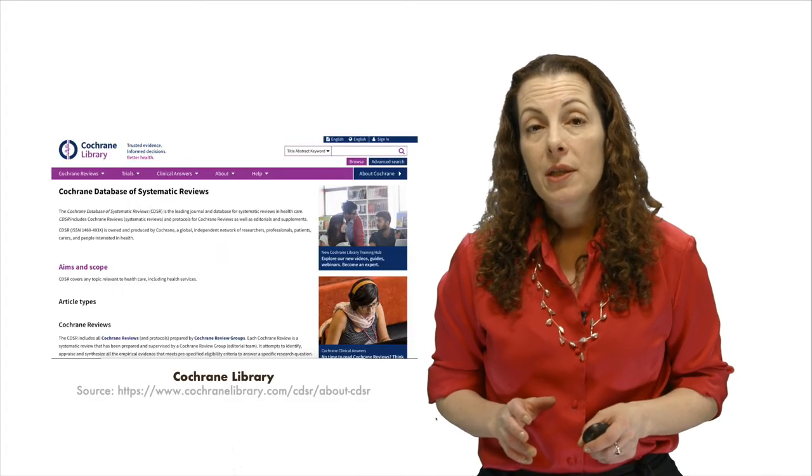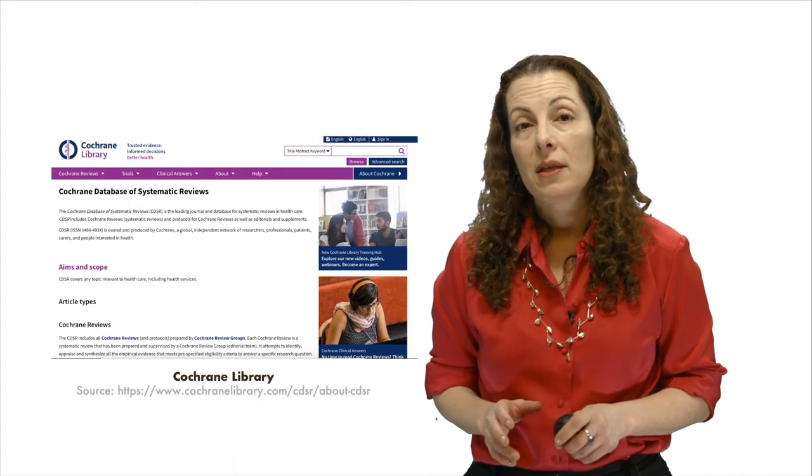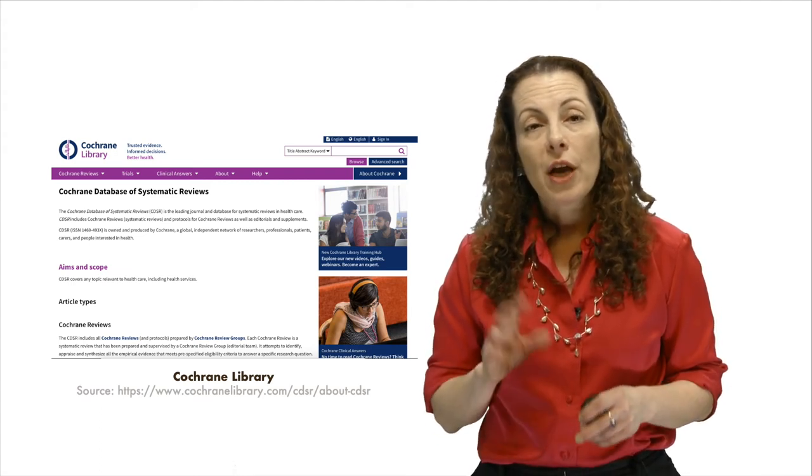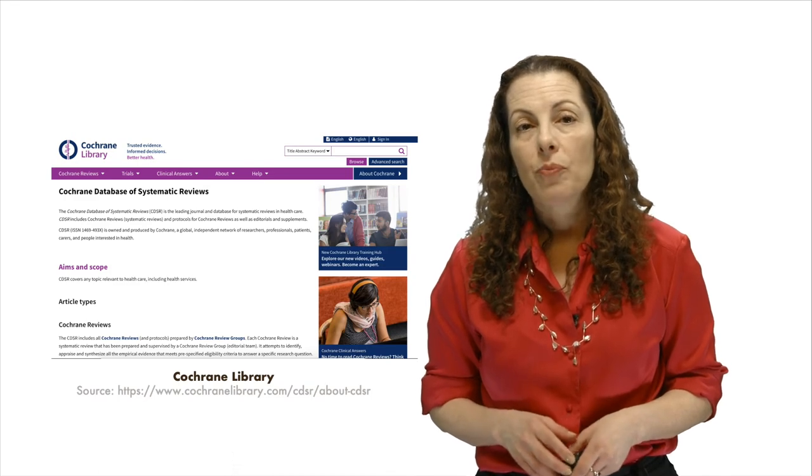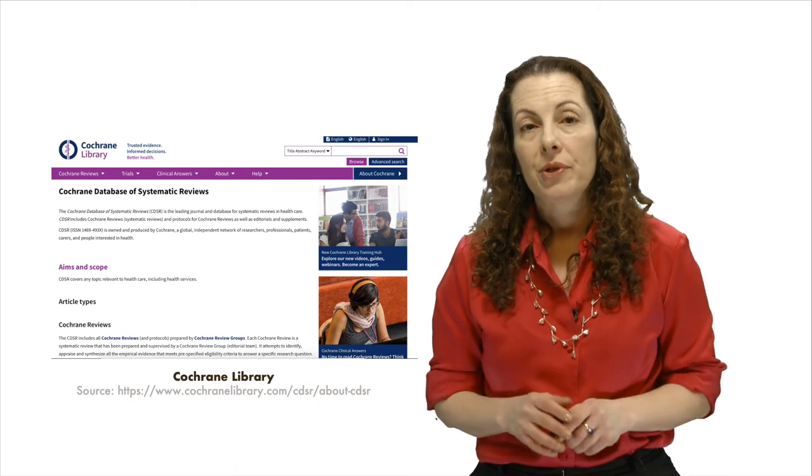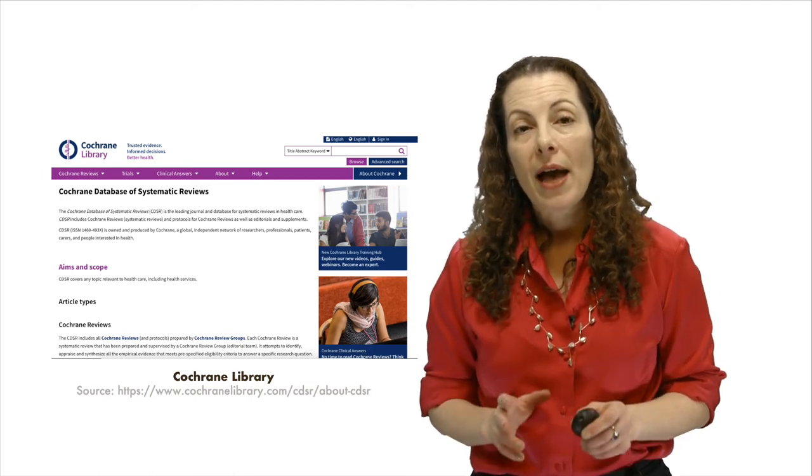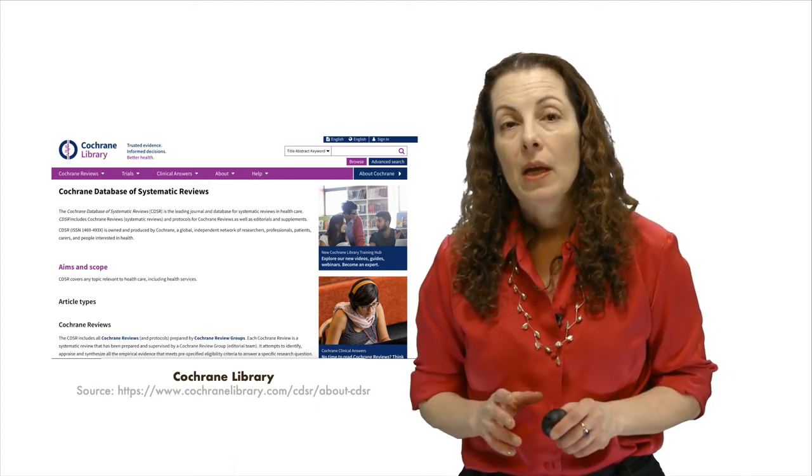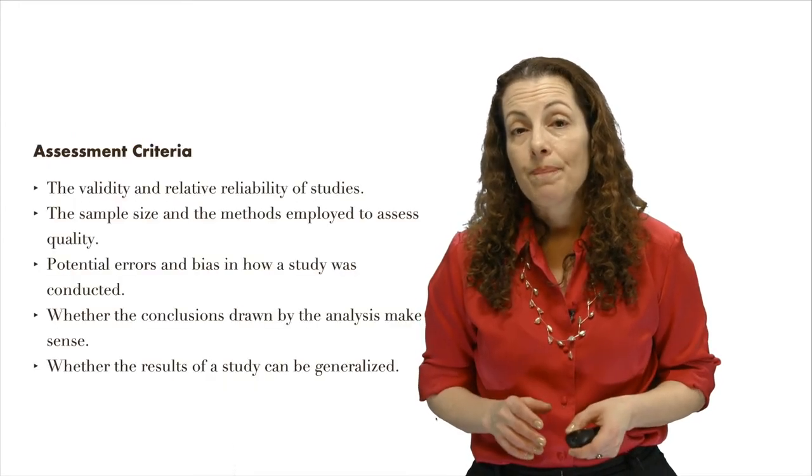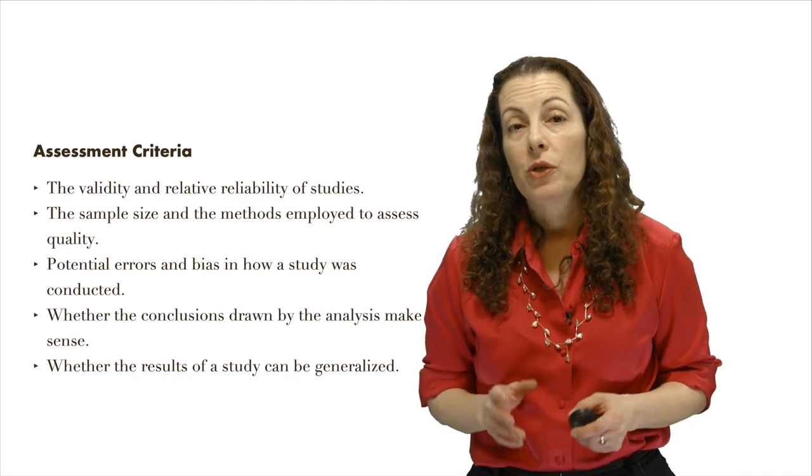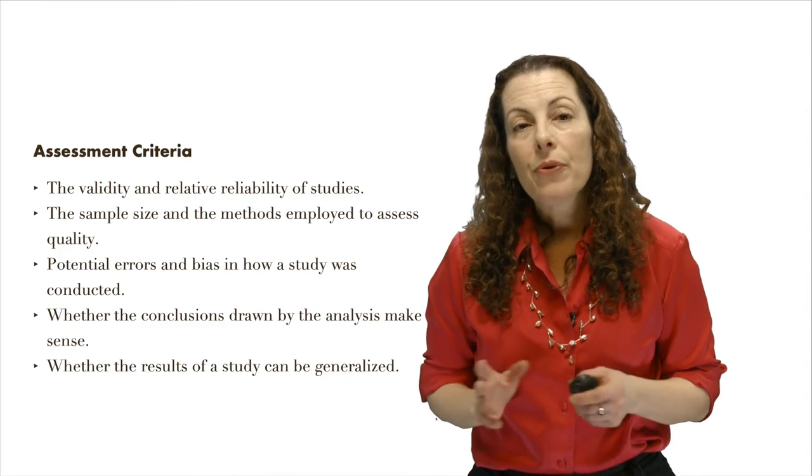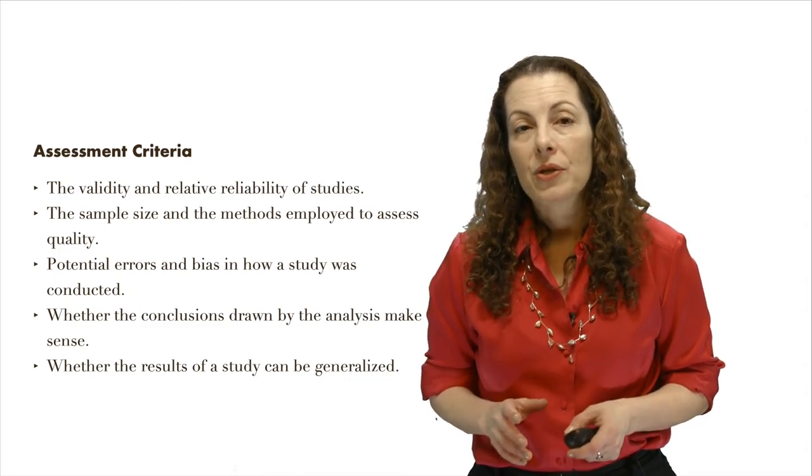Systematic reviews of RCTs comprehensively assess studies in a field using transparent and reproducible criteria. Rather than cherry-picking among studies for those that support the desired conclusion, a systematic review looks holistically at all available studies to make it possible to evaluate the strength of a given claim. The review team is going to assess the validity and relative reliability of studies, the sample size and the methods employed to assess quality, potential errors and bias in how a study was conducted, and whether the conclusions drawn by the analysis make sense.